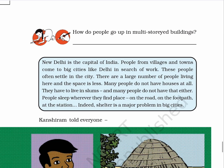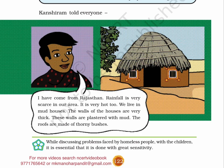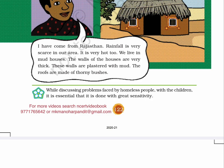There is a picture given on page No. 122. In this picture, a boy is there on the left and on the right side, a picture of a mud house is given. The boy is telling something about his house, written as text in the talking bubble. Kanshi Ram told everyone: I have come from Rajasthan. Rainfall is very scarce in our area. It is very hot too. We live in mud houses. The walls of the houses are very thick. These walls are plastered with mud. The roofs are made of thorny bushes. Note: While discussing problems faced by homeless people with the children, it is essential that it is done with great sensitivity. Page No. 123.